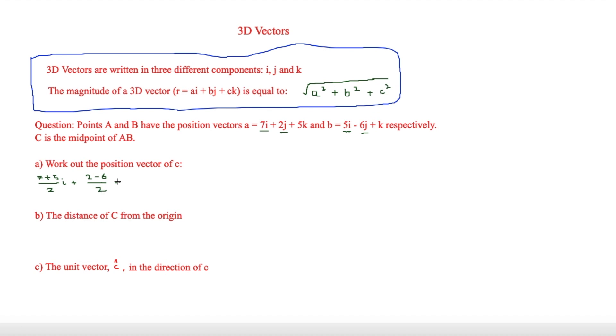And then finally we'll be adding the k's. So then we have 5k plus k which is 5 plus 1 over 2. That is k, this one here is j. So then that is going to be equal once we've done it all together, it's going to be equal to 6i minus 2j and then plus 3k.